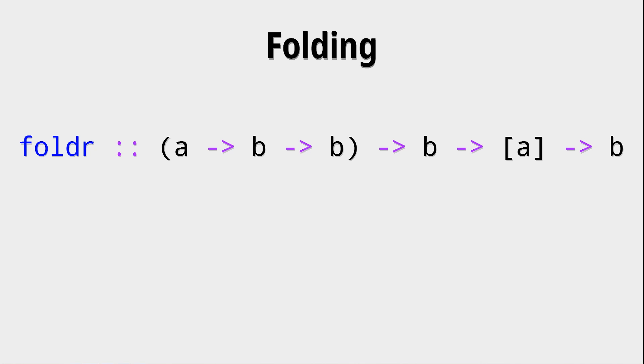Fold r takes one function as its first argument. This function has two arguments, one of type a and one of type b, and it also returns type b. After that fold r gets an argument b and a list of type a and it returns something of type b.